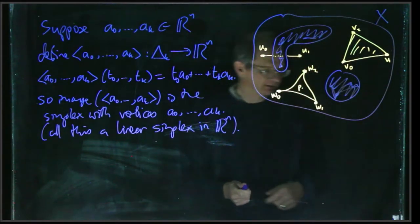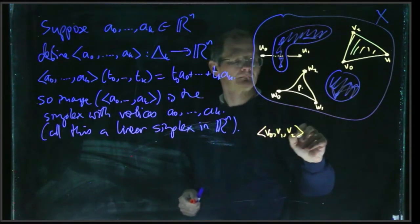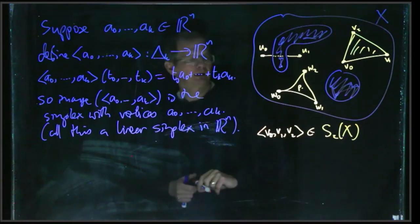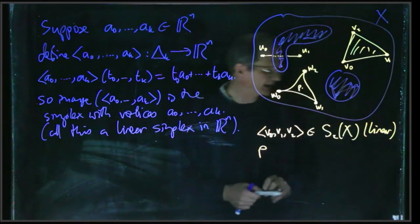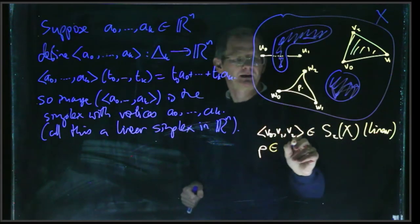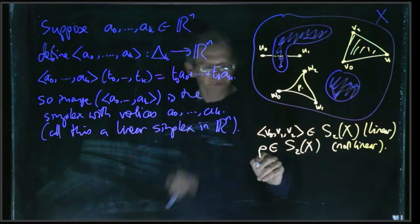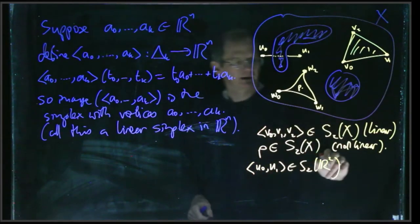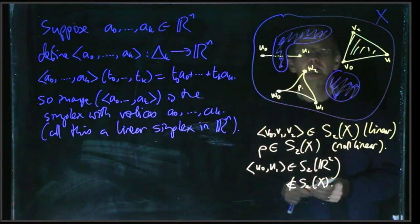So if we look over at this example over here, so yeah, we've got v₀, v₁, v₂. Okay, so that's a linear 2-simplex. It's a linear 2-simplex in X. For P, you've got this map - this little picture here is supposed to indicate a map, a continuous but non-linear map P from the triangle into X. So P, that is another element of S₂(X), but it's a non-linear element. If we do ⟨u₀, u₁⟩, that's in S₁ of the plane, right? But it's not in S₁(X). The endpoints lie in X, but the full simplex doesn't, so this doesn't count as an element of S₁(X).